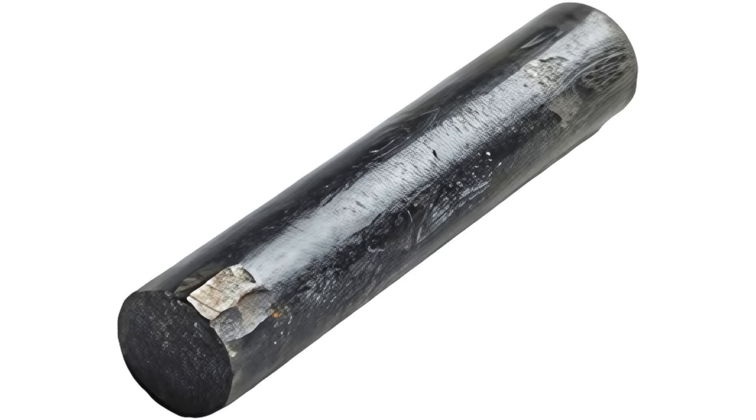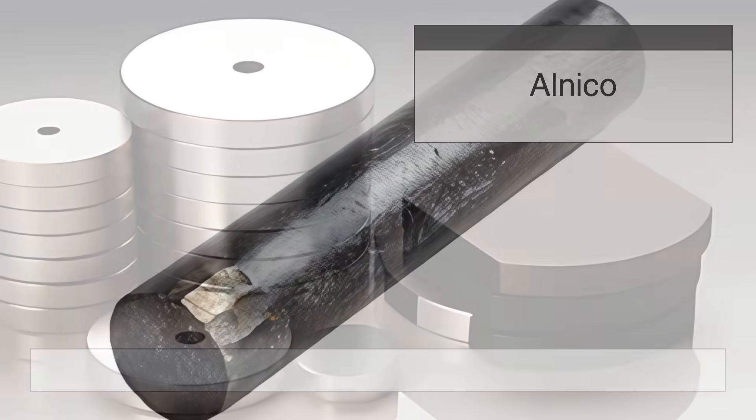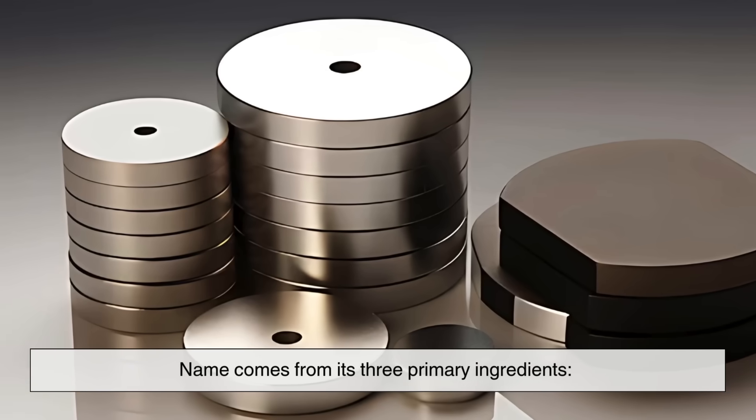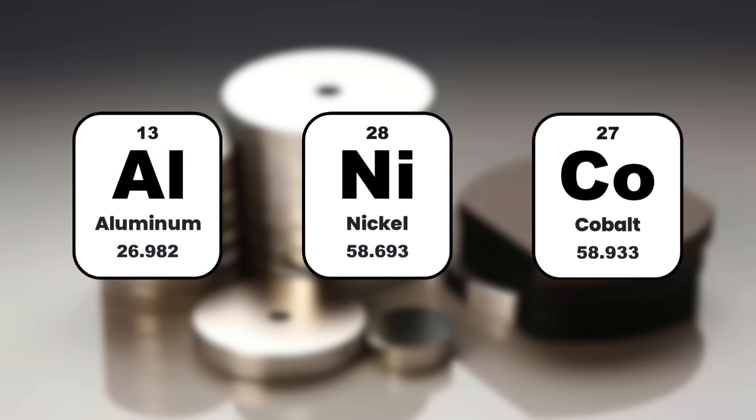Before we get into how it's made, let's talk about what Alnico actually is. The name itself comes from its three primary ingredients: aluminum, nickel, and cobalt.